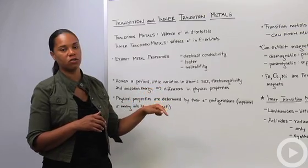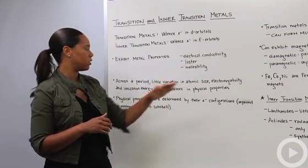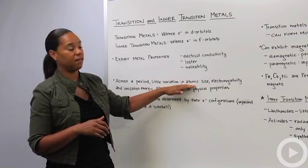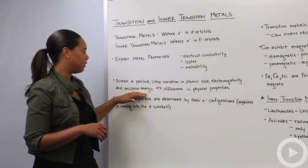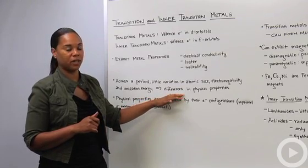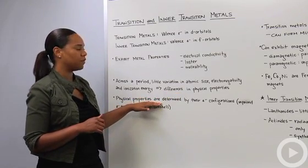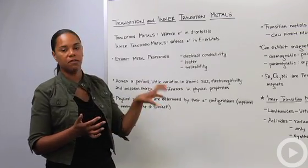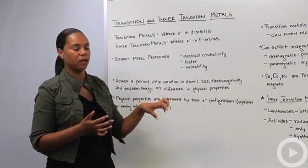So across a period in the transition metals and the inner transition metals, remember periods are the rows, so going across a row, there's little variation in the atomic size, in the electronegativity, and in the ionization energy. However, there are differences in the physical properties. And so those differences in physical properties are determined by the electron configurations of the various elements that fall within these two groups.